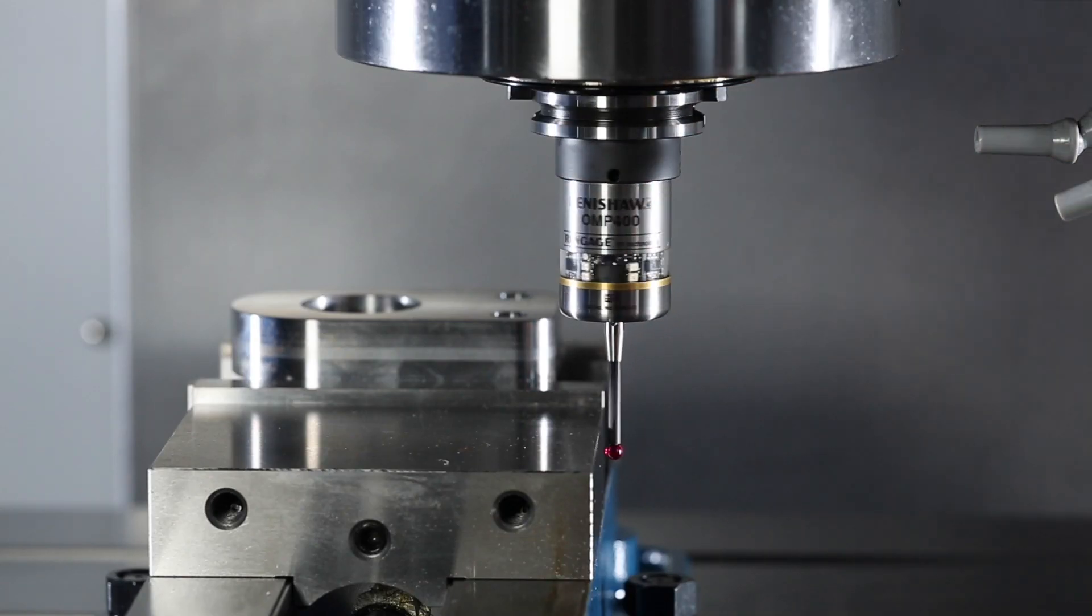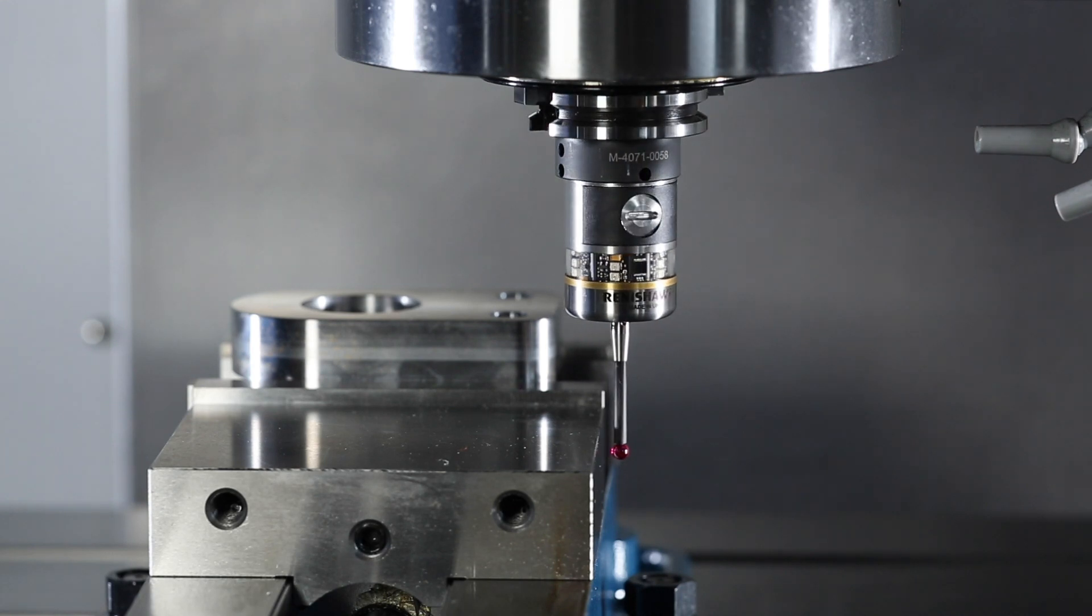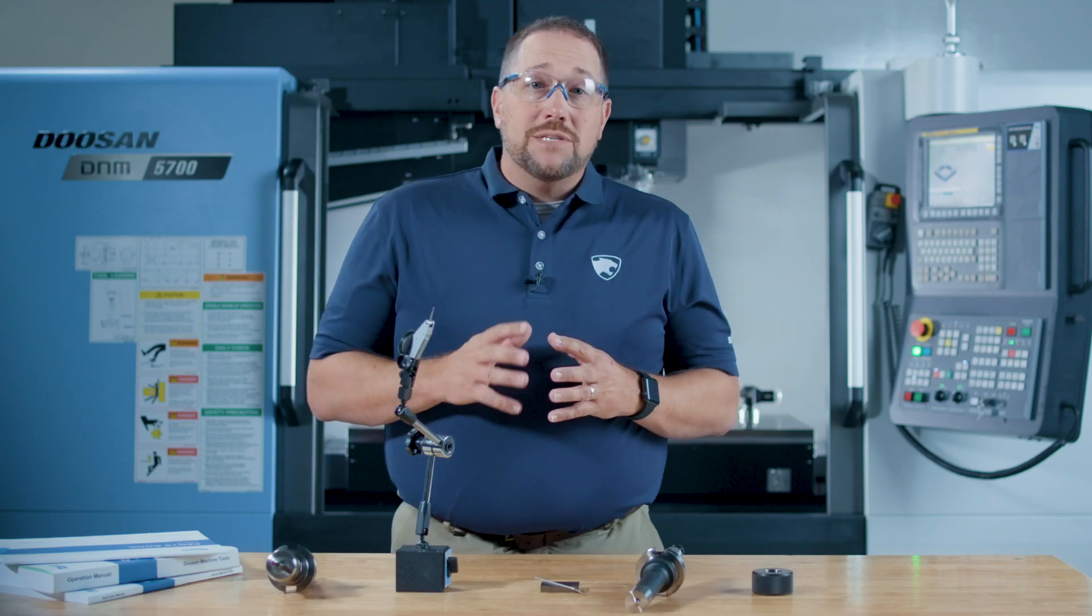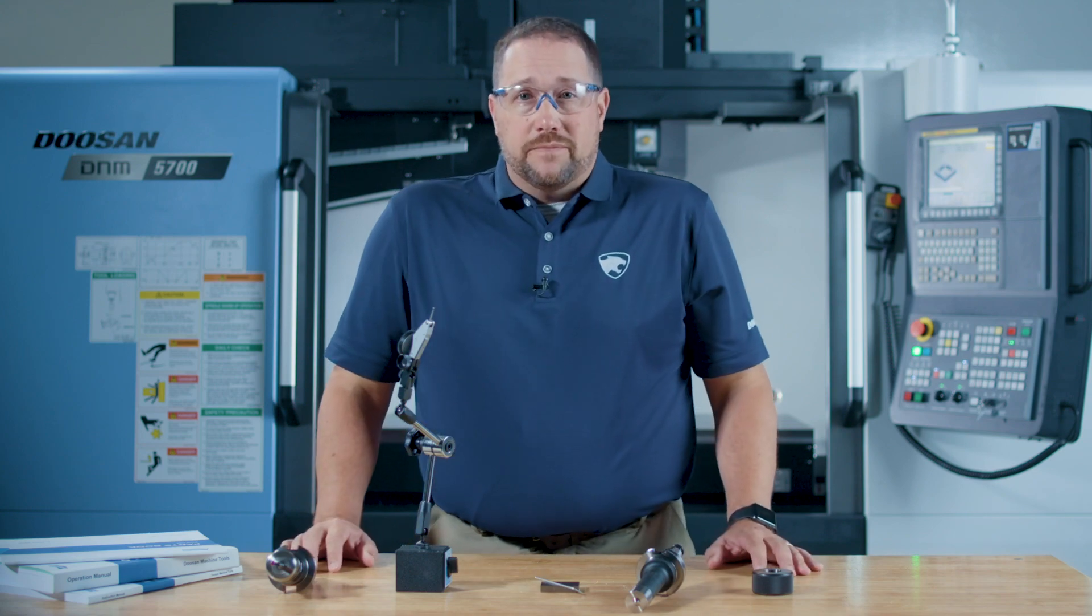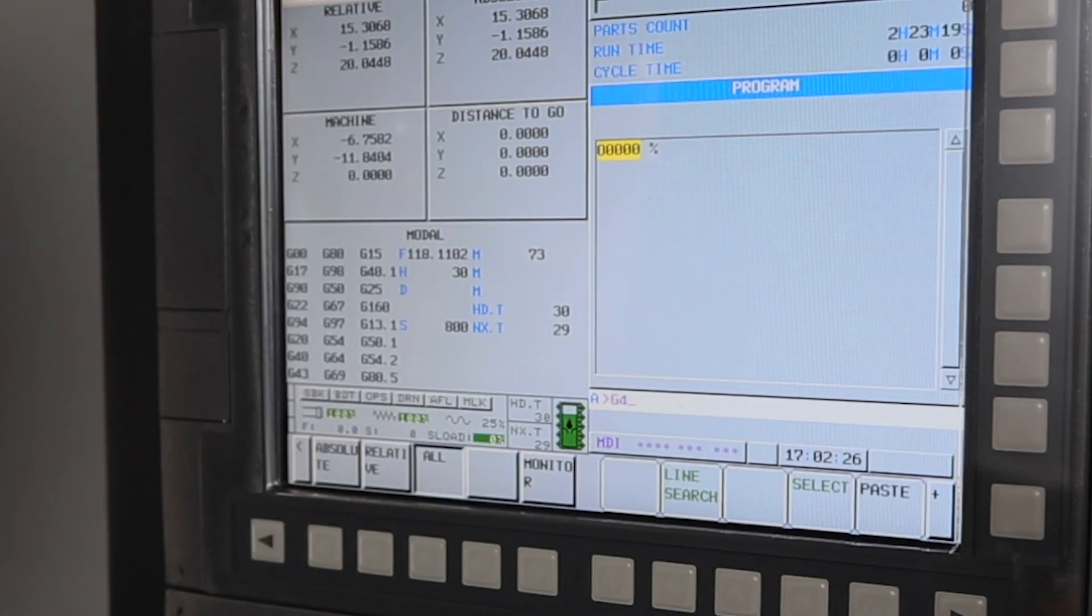Doosan recommends making your probe the last tool number in your magazine. So in the case of this DNM, that's going to be tool number 30. I'm going to command G43 into block, M6, T30 into block, H30 into block, into MDI.